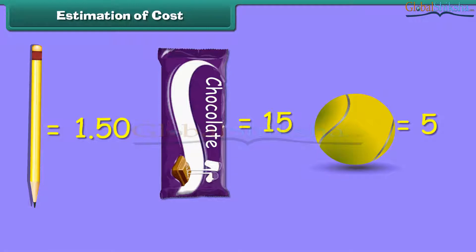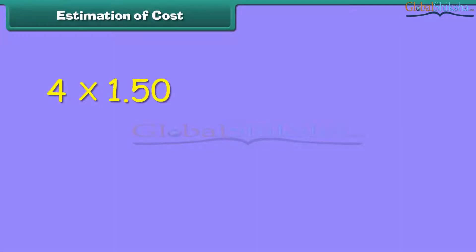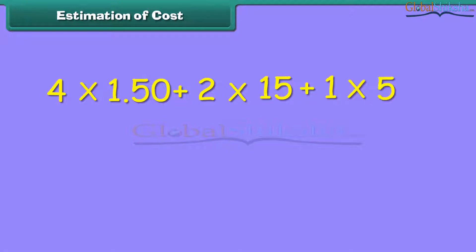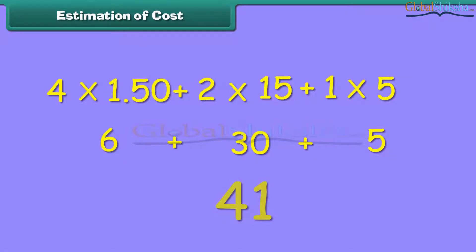Now we calculate the total cost. Total cost is equal to 4 × 1.50 plus 2 × 15 plus 1 × 5. This is equal to 6 plus 30 plus 5 rupees, which amounts to rupees 41. Thus, this is the estimated cost.